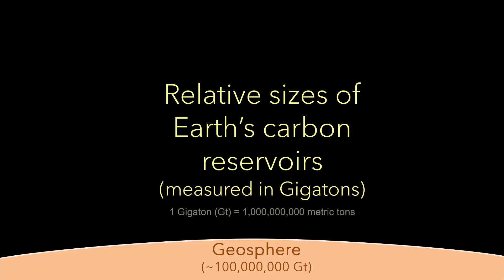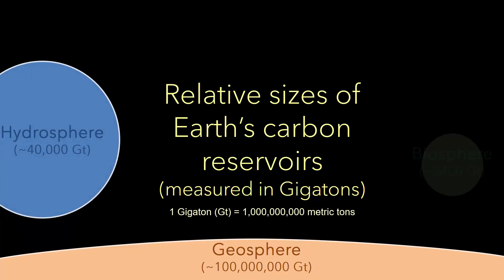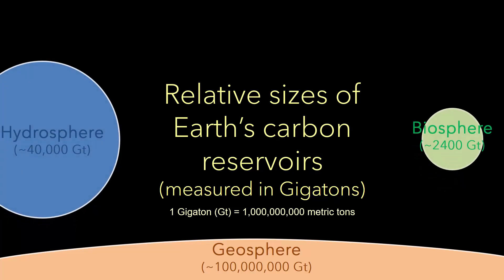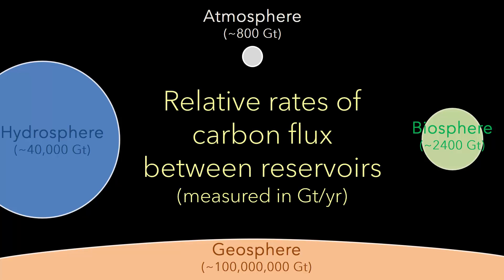This figure shows the relative sizes of the carbon reservoirs within each component of the Earth's system. Note that the geosphere has the largest amount of carbon, and the atmosphere has the least. However, while the atmosphere is the smallest of the reservoirs, it experiences the largest relative flux. In contrast, material moves in and out of a natural geosphere reservoir very slowly over millions of years.